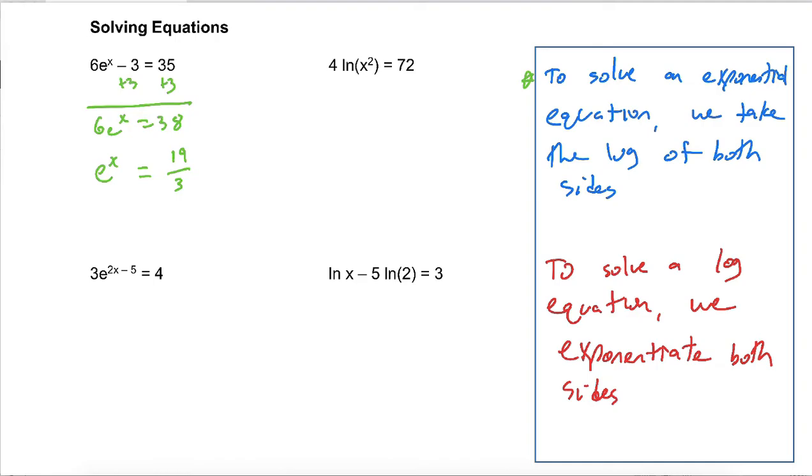Unlike other exponentials where we have to take the common log of both sides, when we're dealing with e, we can undo it with the natural log of both sides. So I will take the natural log of both sides, and all that I have to say is what happens here is that ln of e to the x is just x. Because log base e of e to the x, the log base e and the exponential base e cancel out.